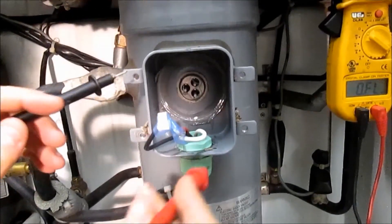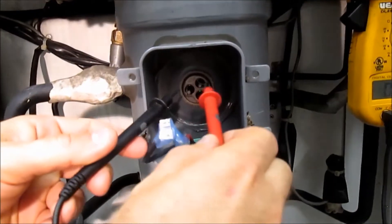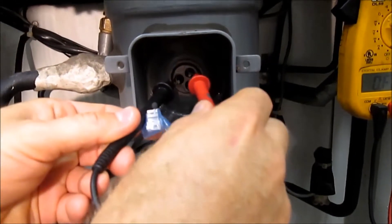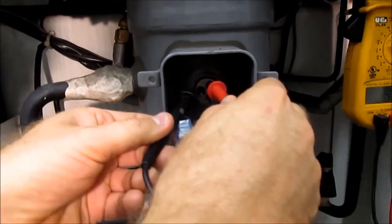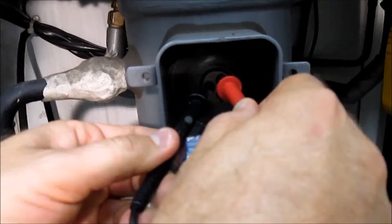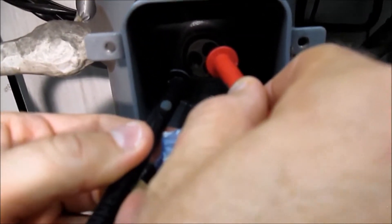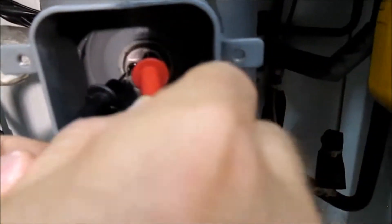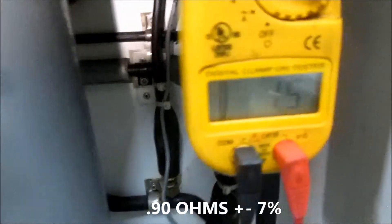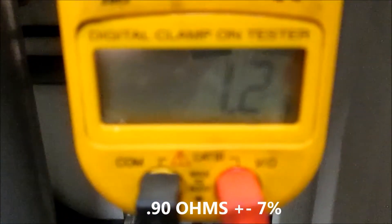Okay, we're going to check the resistance on the compressor. So we go here, and that should be around 0.9 ohms, 1 to 0.9. Okay, next one.